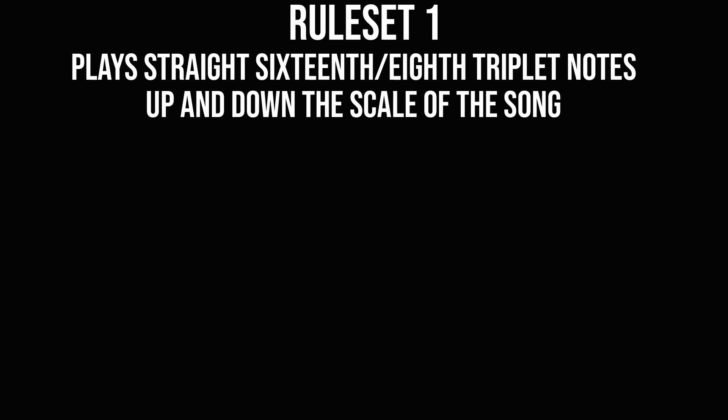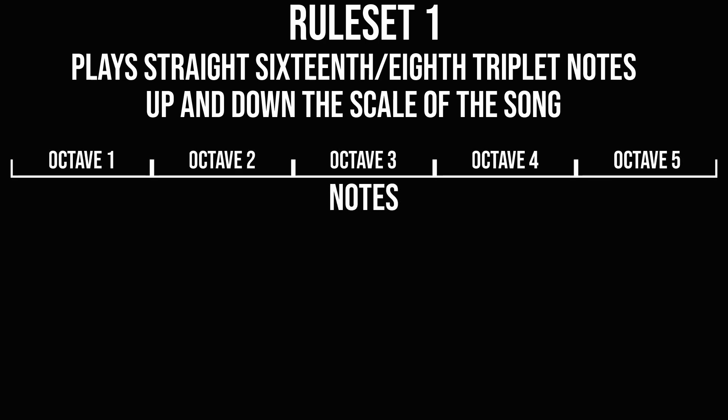So let's start writing some algorithms. Starting really simple here — we will just tell our friend to play straight 16th notes, or eighth triplet notes if the song has a triplet feel, up and down the scale of the song. Let's start by just gathering all of the notes of the scale into a large list, including all of the octaves that our friend can play.